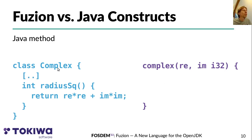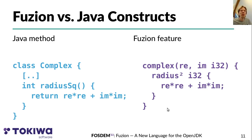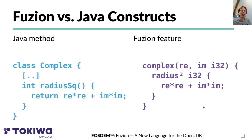Next, a Java method: we add a method 'radius_squared' to our complex class. In Fusion, doing that is very similar — you don't need a return statement; it's just the last statement that defines the return value. Types in Fusion always go to the right, not to the left side as in Java.